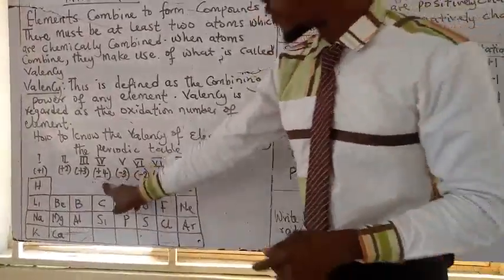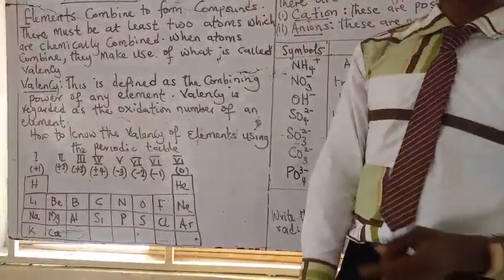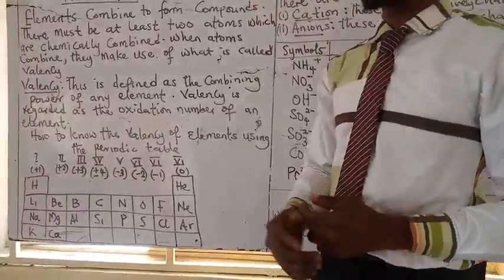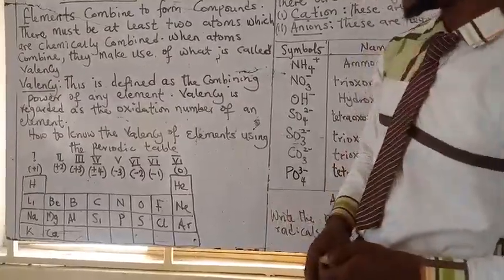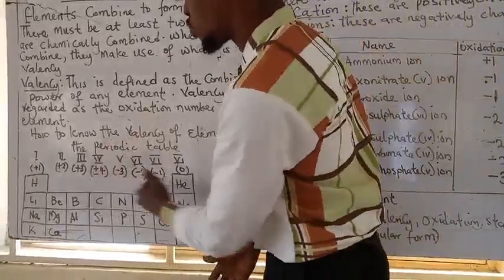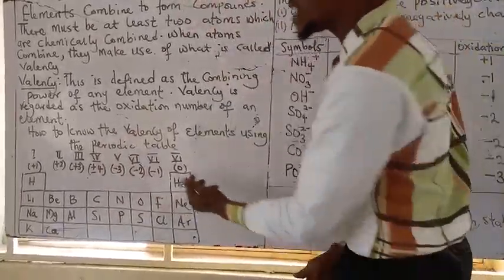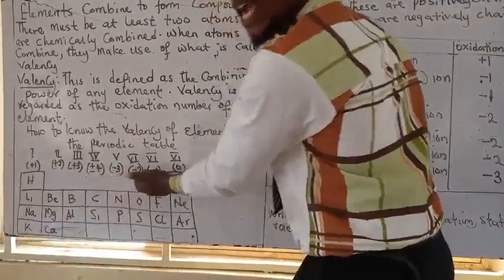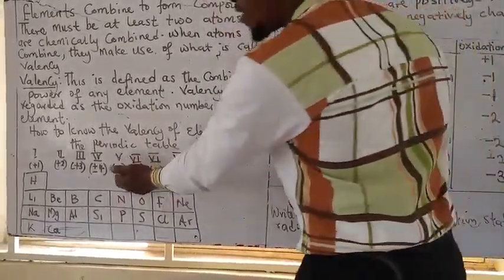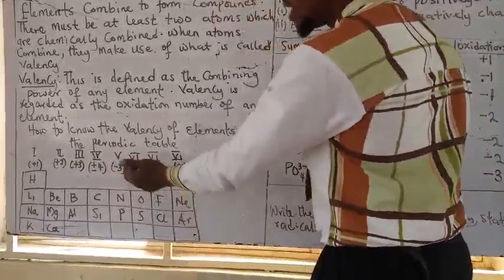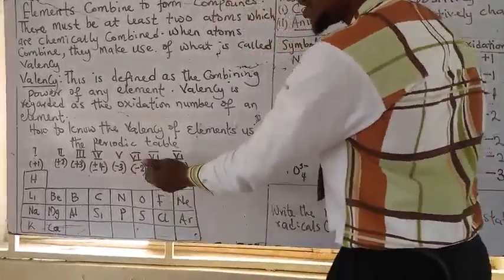If you come down to group 4, you have a valency of plus 4 or minus 4. Now if you go to the non-metals which are group 5 to group 7, you will see that the valency will change to negative. So group 5 is minus 3, group 6 is minus 2, group 7 is minus 1.